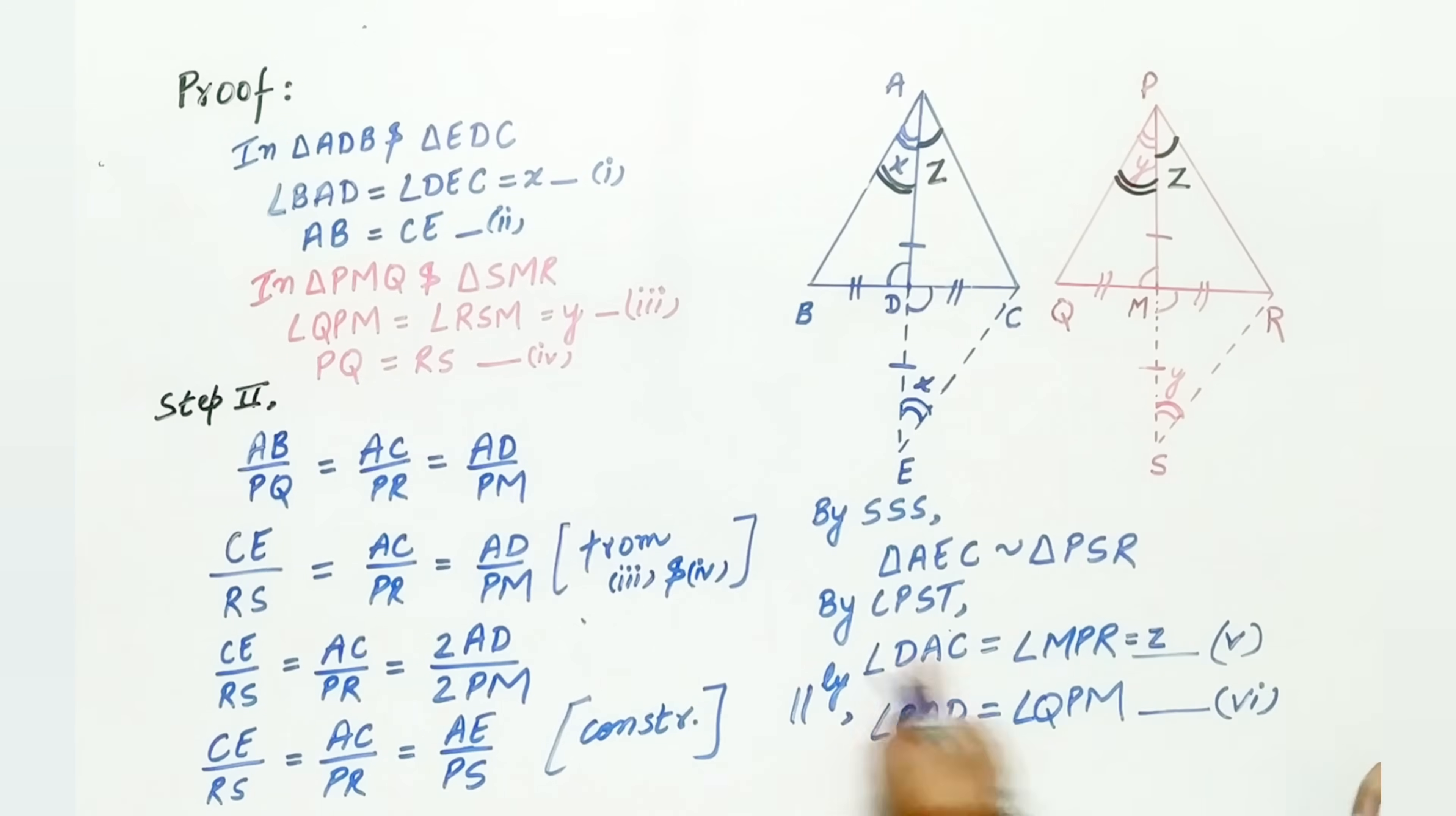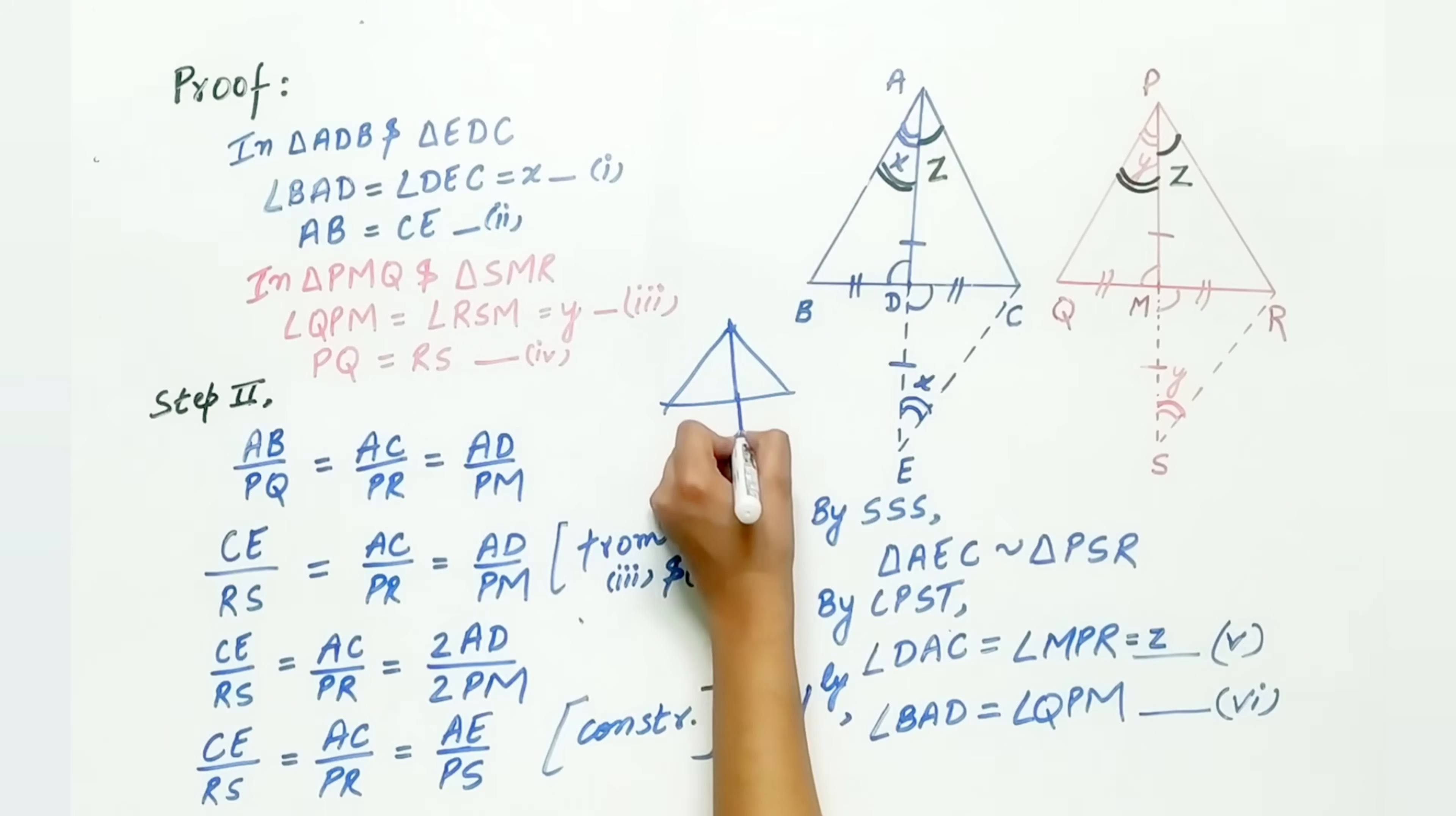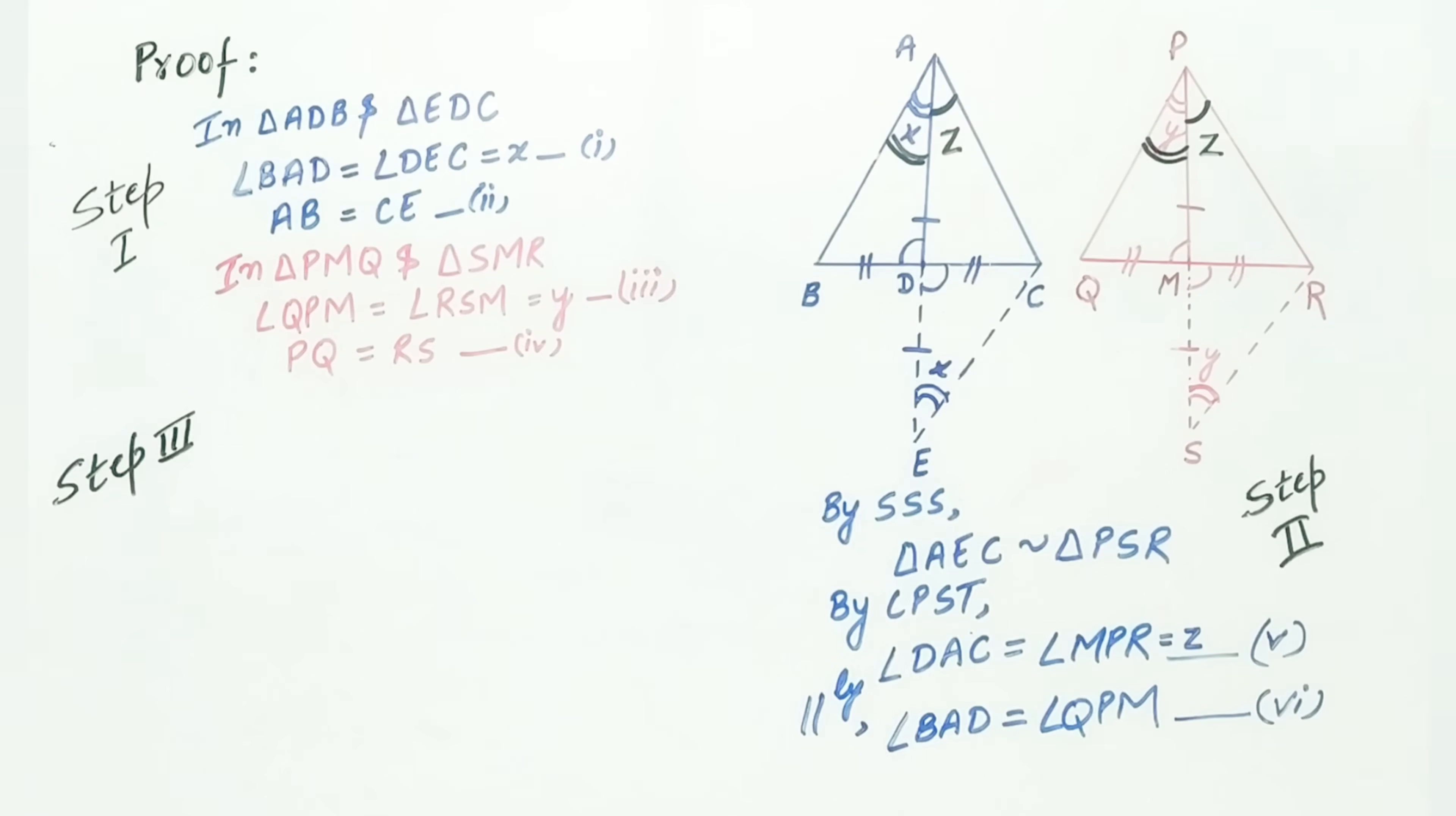Now, how we will prove it? You have to extend BD to point E and join BE and repeat the entire process. Now, let's move to step 3.